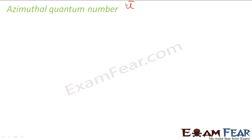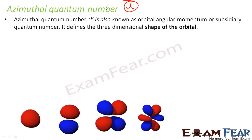Then we have something called azimuthal quantum number. This is L, and this is also known as orbital angular momentum or subsidiary quantum number. It defines the actual shape of the orbital.